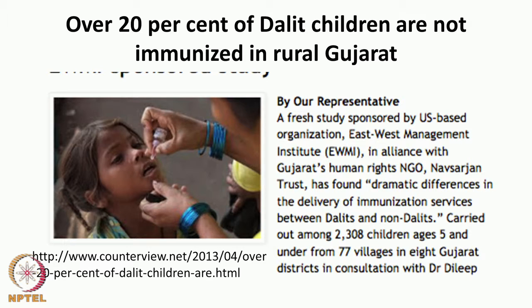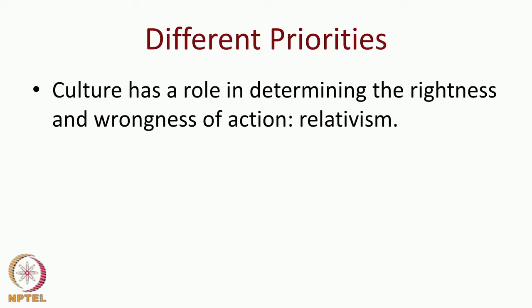A recent news item illustrates this: over 20% of Dalit children are not immunized in rural Gujarat, according to a study by the US-based East West Management Institute. This shows how caste plays an important role in our country and culture. When we talk about ethics here, this directly refers to a problem of injustice, with accessibility affected by social factors like caste, religion, financial background, and gender.